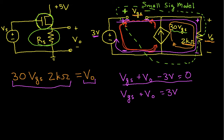I have VGS plus 30 VGS times 2K ohms is equal to 3 volts. Now I can simplify this. I have 30 times 2K ohms. That's basically 30 times 2,000, which is 60,000, 6 times 10 to the 4th.